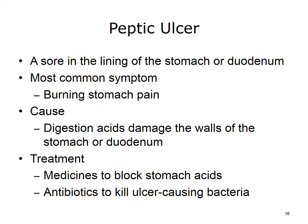Now let's focus on the various conditions that might affect this body system. The first condition we'll discuss is peptic ulcer, also referred to as a gastric ulcer or stomach ulcer. A peptic ulcer is a sore in the lining of your stomach or your duodenum. A burning stomach pain is the most common symptom, which may come and go for a few days or weeks, and may bother you more when your stomach is empty. Peptic ulcers happen when the acids that help digest food damage the walls of the stomach or duodenum. Treatment may include medicines to block stomach acids, or antibiotics to kill ulcer-causing bacteria.